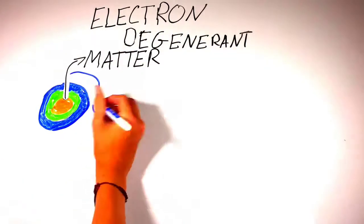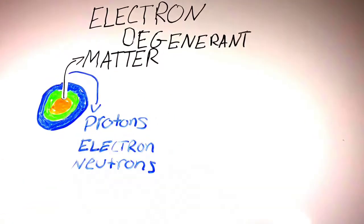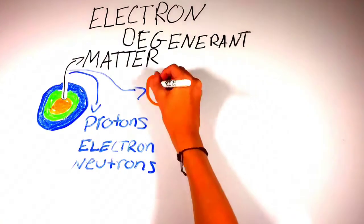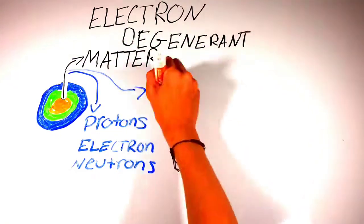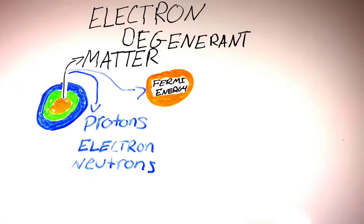The degenerate matter is composed of protons, neutrons, and electrons, as opposed to molecules. Inside degenerate gas, all quantum states are filled up with Fermi energy, which is composed of fermions, a subatomic particle.